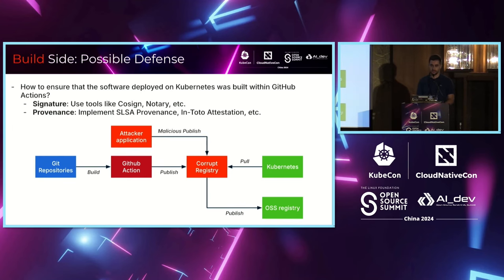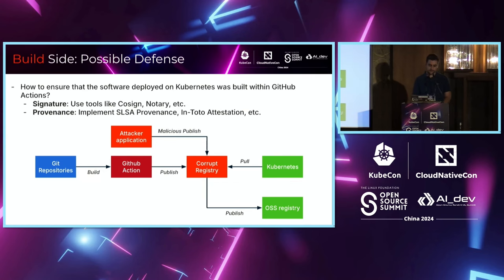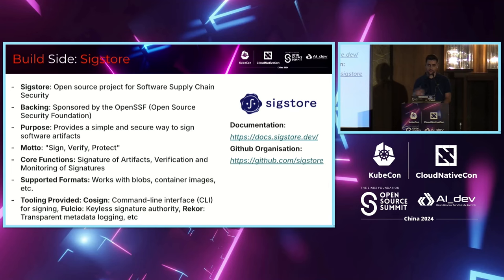On the build side, we want to answer: how do we ensure that software deployed on Kubernetes was built within our organization's GitHub Actions? We want to protect against possible registry corruption. We'll implement two things: a signature system and a provenance system for our artifacts. Starting with the signature side, we'll use the Sigstore project — an open source project for software supply chain security backed by the OpenSSF. Its motto is: sign, verify, and protect.